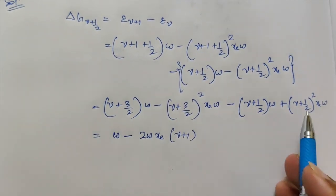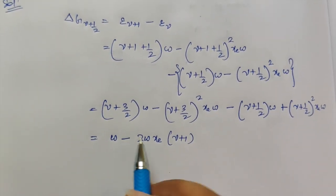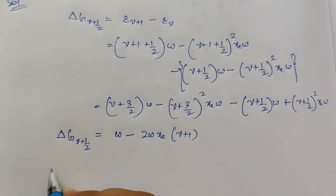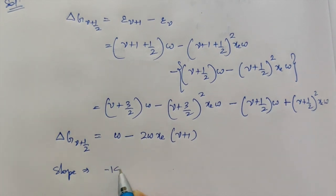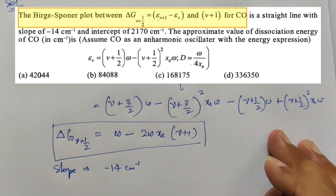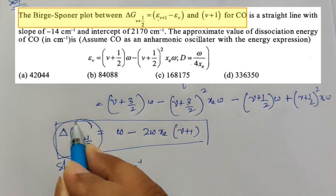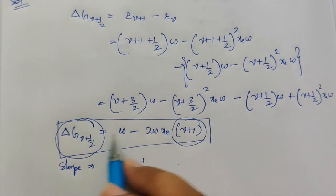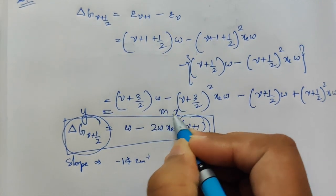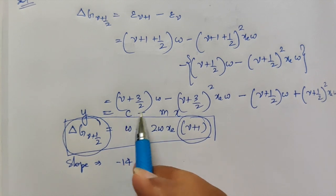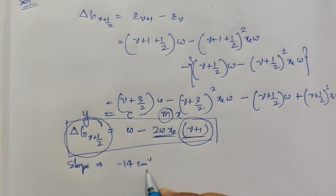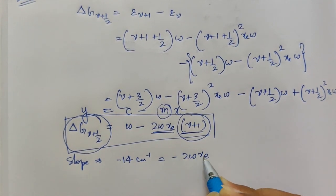You can verify the math yourself to confirm this result. So ΔG(ν+½) = ω − 2ωXe·(ν+1). Now comparing this with the straight-line equation y = mx + c, where (ν+1) is on the X-axis: the slope is the coefficient of (ν+1), which is −2ωXe. The slope is given as minus 14 centimeter inverse. Wait — the slope was given as minus four, so −2ωXe = −4, giving ωXe = 2. Actually solving: −2ωXe = −14, so ωXe = 7.